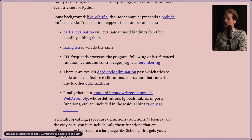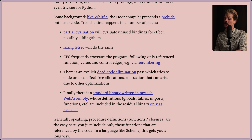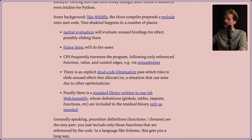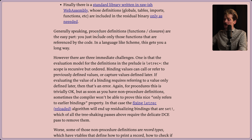The Hoot compiler prepends a prelude onto user code. Tree-shaking happens in a number of places: there's partial evaluation, which will evaluate unused bindings for effect, possibly eliding them. Fixing let-rec will do the same. CPS conversion follows only referenced functions, values, and control edges. There's an explicit dead code elimination pass which tries to elide unused effect-free allocations, a situation that can arise due to other optimizations. Finally, there's a standard library written in raw-ish Wasm, whose definitions - like globals, tables, imports, functions, etc. - are included in the residual binary only as needed. Generally speaking, procedure definitions like functions and closures are the easy part: you just include only the functions that are referenced by the code.